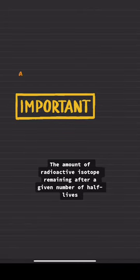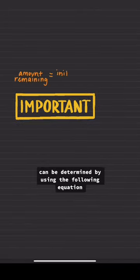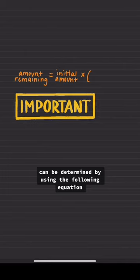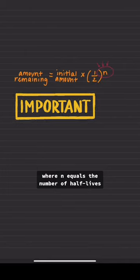The amount of radioactive isotope remaining after a given number of half-lives can be determined by using the following equation, wherein n equals the number of half-lives.